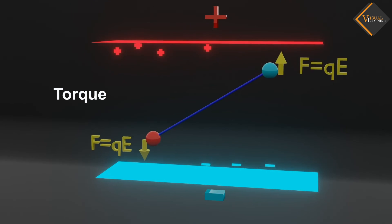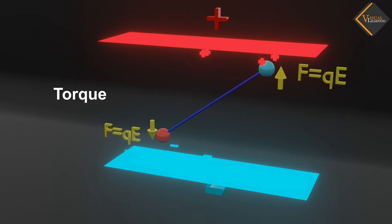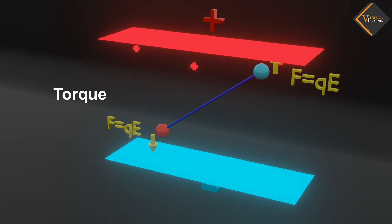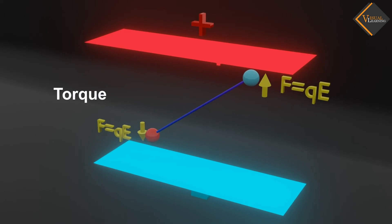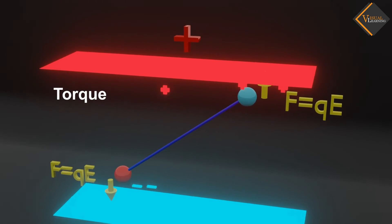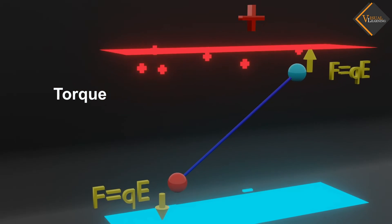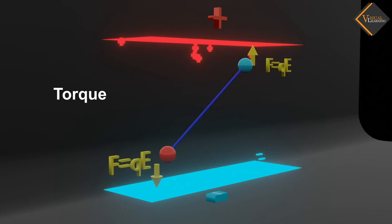The value of torque depends on the strength of the electric field and the characteristics of the dipole, such as the charge separation distance. Understanding the torque on an electric dipole helps us explain its behavior in response to an electric field.